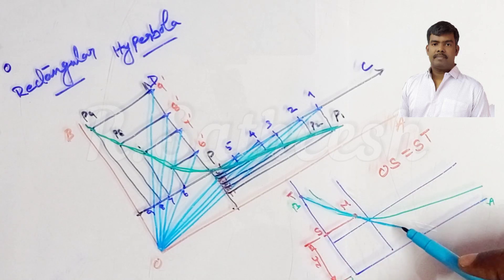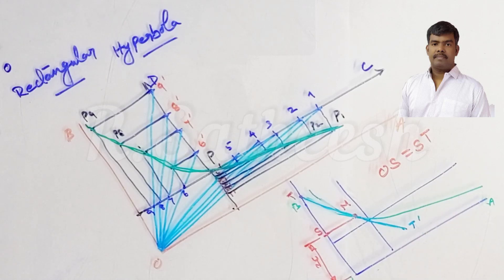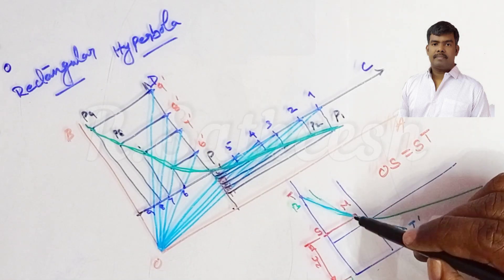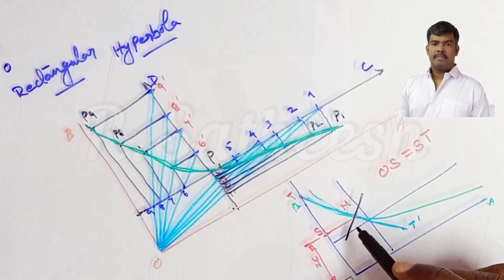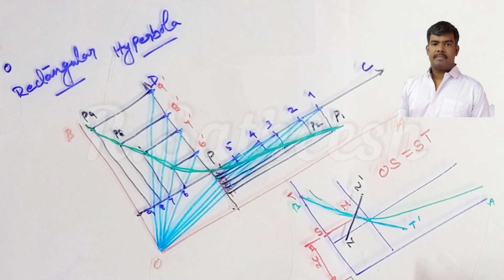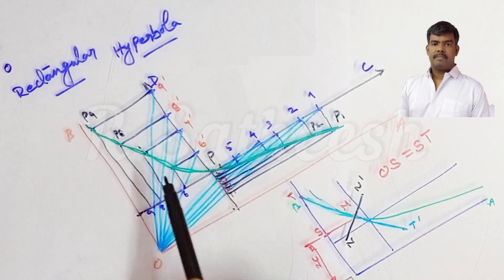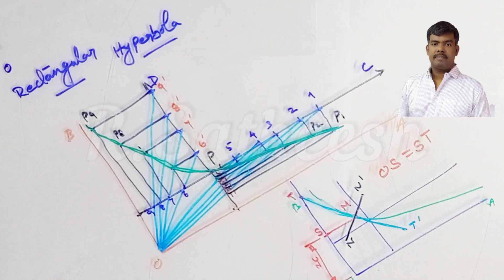The line through T and M extended is the tangent T-T'. For the normal, draw a perpendicular line to T-T' passing through the same point M. This perpendicular line is N-N', which is the normal. This completes the rectangular hyperbola construction with its tangent and normal. Thank you.